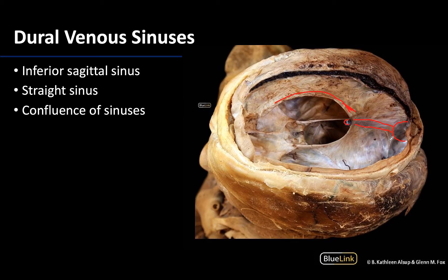The confluence is typically located superior lateral to the internal occipital protuberance, and it will then flow bilaterally into paired transverse sinuses — so you'll have a right and a left transverse sinus, but we'll see that a bit better in a moment.